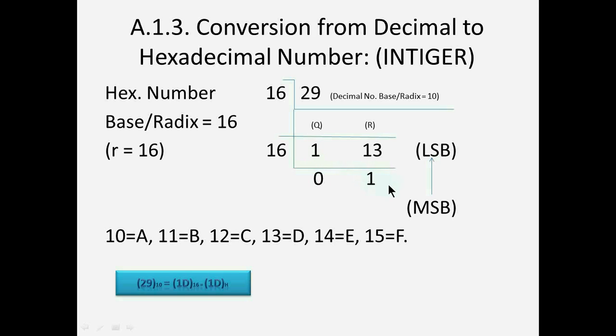Now these remainders will have to arrange sequentially from MSB to LSB. Here MSB is 1 and LSB is 13.